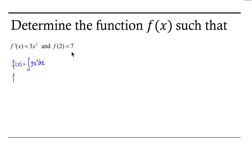The antiderivative of 3x squared dx is 3 times x cubed times 1 third. Notice that we can multiply that 3 and that 1 third, and we end up with 1. And of course, we must have this constant of integration. So f of x is simply x cubed plus c.